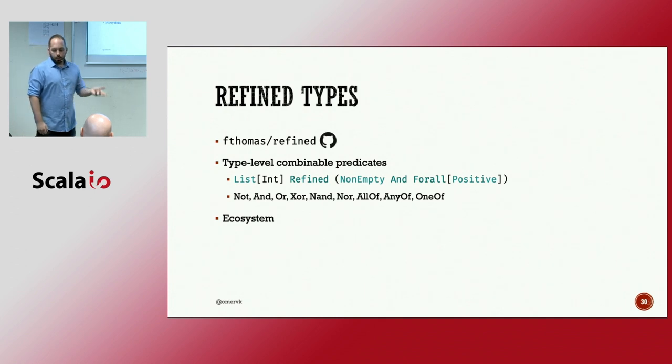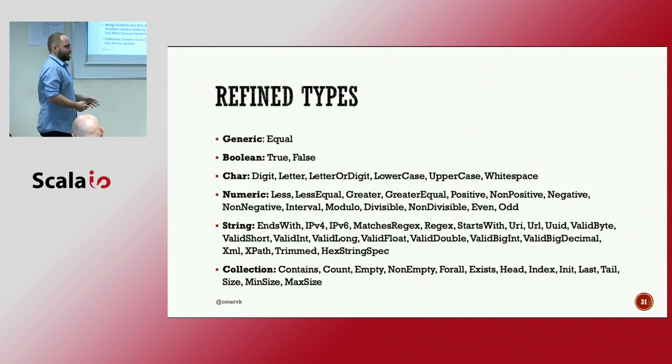We're not catching exceptions as a result of something that happened. But we are checking the values to make sure that they follow what the function signature is. So refined types are a library. As I said, it's on GitHub. They're type-level combinable predicates. So you can write something that's like list of integers where all of the integers are positive and it's not an empty list. And this would be checked at compile time. This is very, very nice. It has all these Boolean operators. And it has an ecosystem. So if you're using a library now, something like Play or Circe or something like that, that has a refined types library for it. So you can start using it immediately. On top of that, there's a ton of predicates. I'm not going to go over them. But you can see there is stuff for Boolean characters, strings, collections, everything. Right? And these are all validated at compile time.